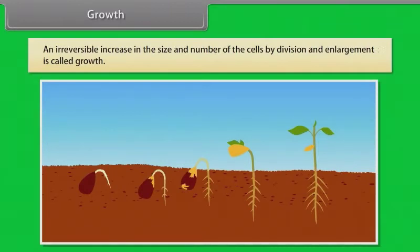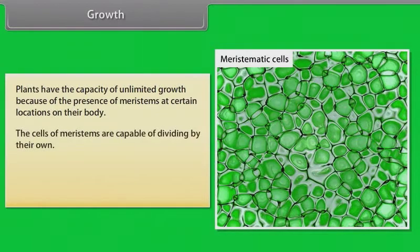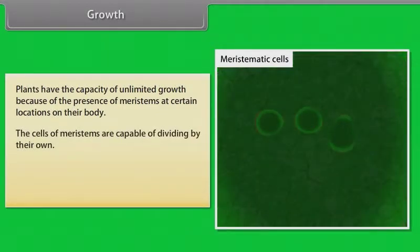An irreversible increase in the size and number of cells by division and enlargement is called growth. In plants, the growth generally is indeterminate. Plants have the capacity of unlimited growth because of the presence of meristems at certain locations on their body.